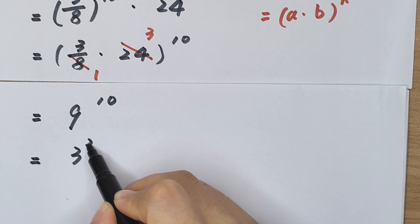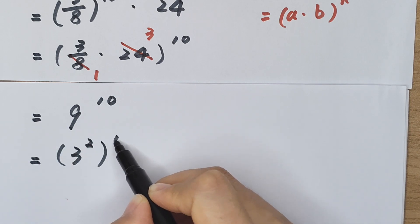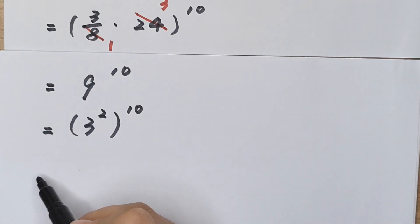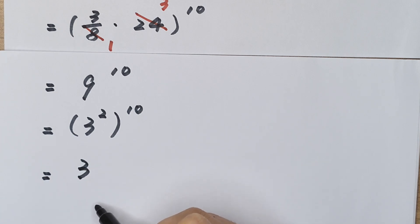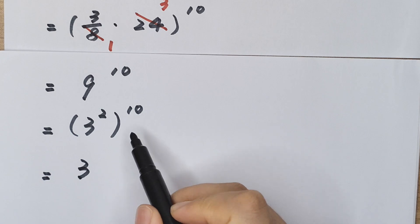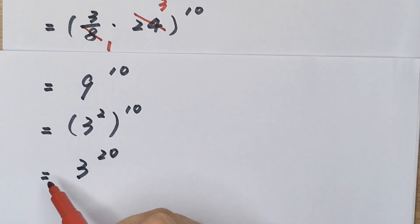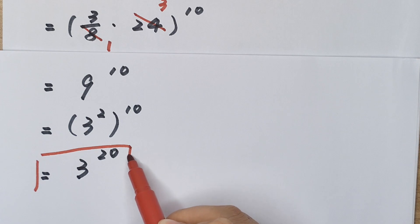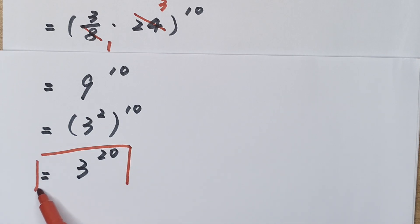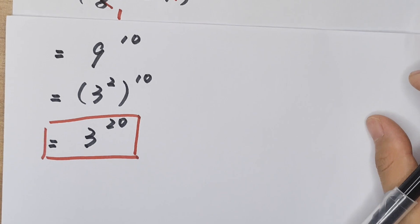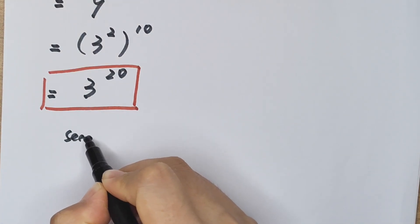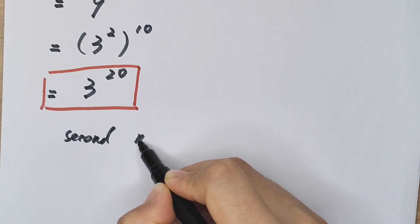So this equals 9 to the power of 10. Since 9 equals 3 squared, this is 3 squared to the power of 10, which equals 3 to the power of 20. So 3 to the power of 20 is the final answer for Method 1. Now we will talk about the second method.